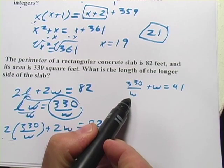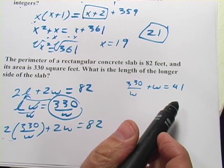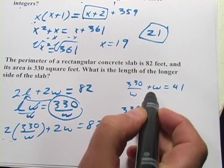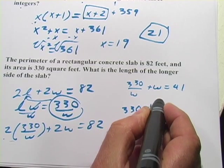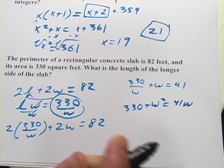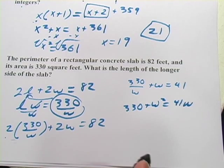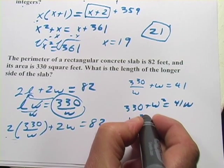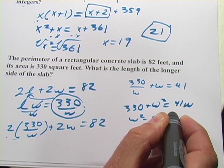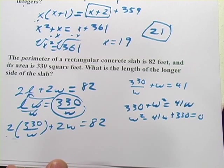And then because I've got W on the bottom here of a fraction, I'm going to multiply everything by W. That would make 330/W become just 330. It would make that W², and it would make this 41W. And when I do a little rearranging there, I would get W² - 41W + 330 = 0. That's my quadratic.